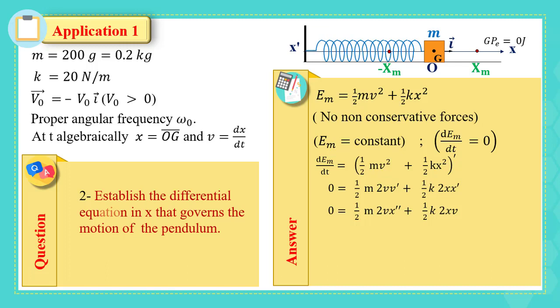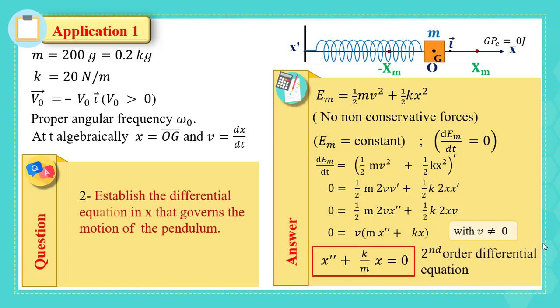Note that v' is x'' and x' can be replaced by v. Then dividing both sides by v (which is not zero in general), we get m·x'' + kx = 0, or equivalently x'' + (k/m)x = 0. This is the second-order differential equation governing the motion.